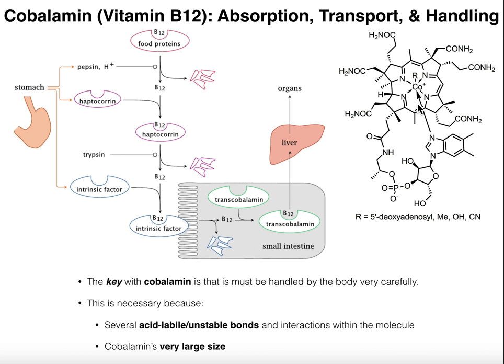The other reason cobalamin handling must be done very carefully is simply that cobalamin is an enormous molecule — it dwarfs the other B vitamins. In fact, the closest thing to it in terms of size is heme, but heme is still a lot smaller than this. Porphyrins are smaller, and even heme A with its very large farnesal group is still smaller. Its large size requires something to hold on to it and carry it around the body from the small intestine to the liver and to the organs. The liver is the main distribution center to give it to all the organs and tissues that need B12.